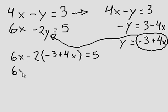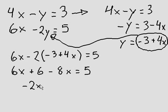Now I can distribute the negative 2. So negative 2 times negative 3 is positive 6. Negative 2 times positive 4x is negative 8x equals 5. Now, 6x minus 8x is negative 2x. And I want to take this positive 6 over to the right side of the equation. So 5 minus 6 is negative 1.